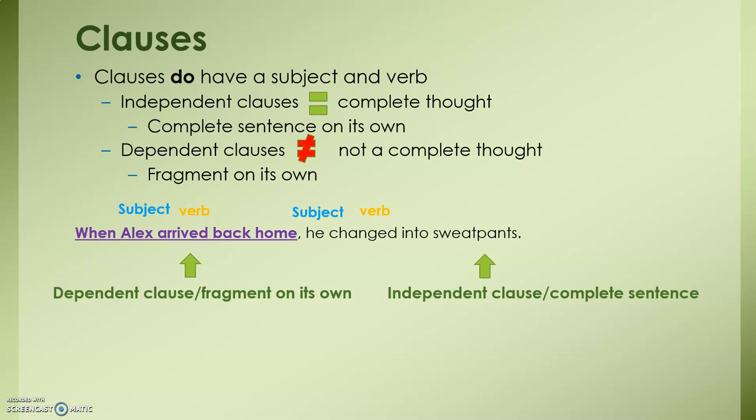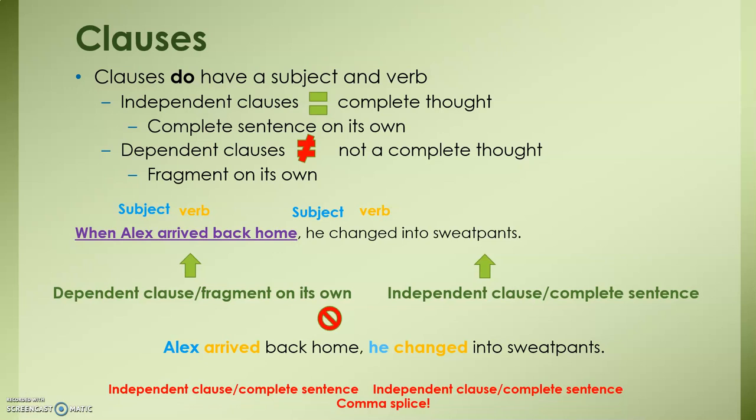Let's look at an example where you wouldn't split it with just a comma. If we take the word 'when' out of the front, we have two independent clauses: 'Alex [subject] arrived [verb] back home, [comma] he [subject] changed [verb] into sweatpants.' Here we have two independent clauses, which would equal a comma splice. So beware — a lot of times, adding a word to the front is what makes it an introductory or dependent clause.